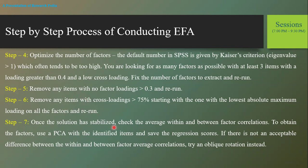Step seven: once the solution has stabilized, check the average within and between factor correlation. To obtain the factor, use a principal component analysis with the identified items and save the regression score. If there is not an acceptable difference between within and between factor average correlation, try an oblique rotation method instead.